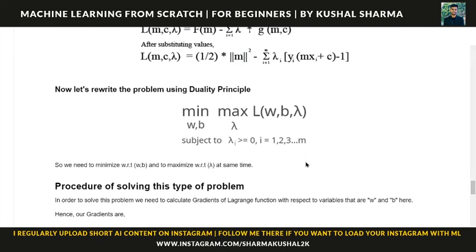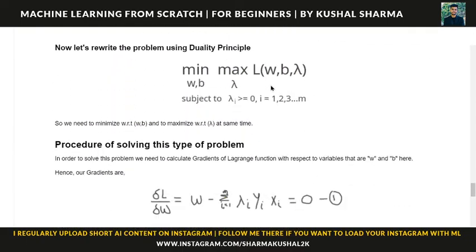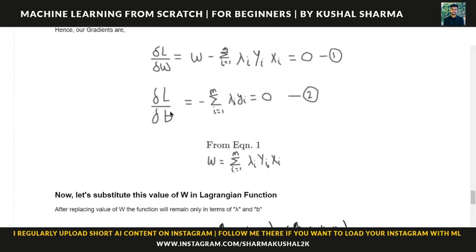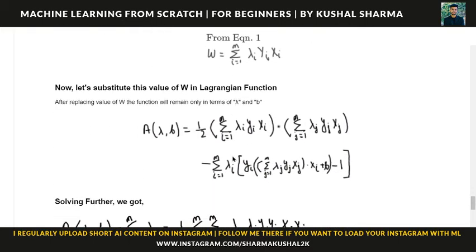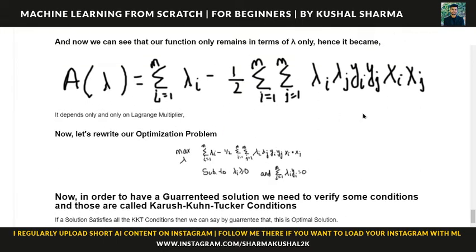According to the duality principle, we first minimize then maximize. We have to eliminate the minimize over w and c. To eliminate this, we take derivatives with respect to w and with respect to c — which we also did in the actual class — and equate them to zero. We find some expressions, substitute them back, and after solving we get one equation in terms of lambda only.